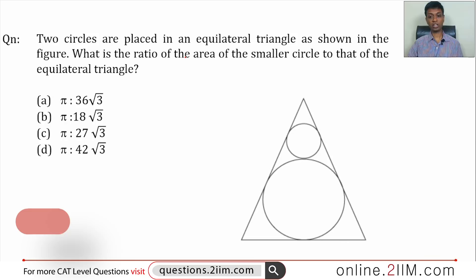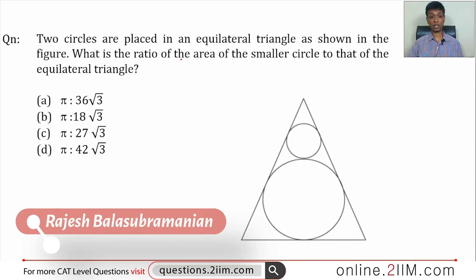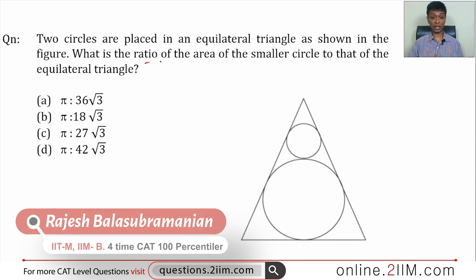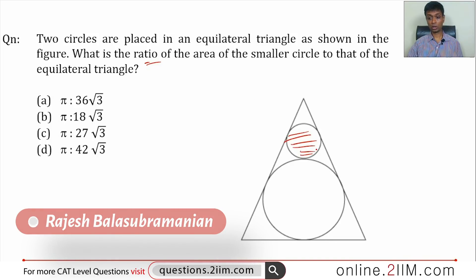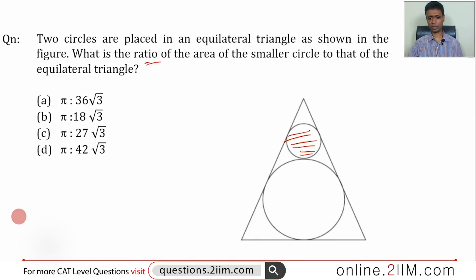Two circles are placed in an equilateral triangle as shown in the figure. What is the area ratio of the smaller circle to that of the equilateral triangle? Equilateral triangle questions are very common.